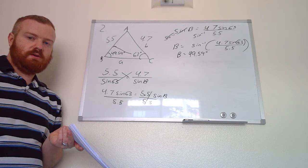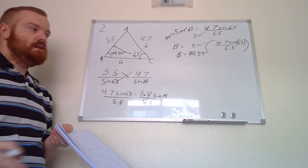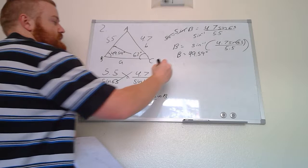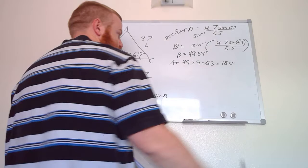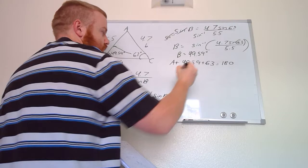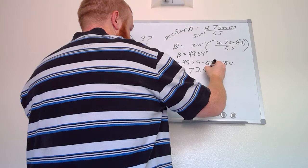Now we have two sides and two angles. The next easiest step is to solve for the third angle. We take angle A plus 49.59 plus 63 equals 180. Adding the two known angles and subtracting from 180 gives angle A equal to 72.41 degrees.